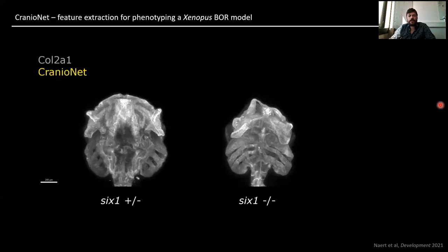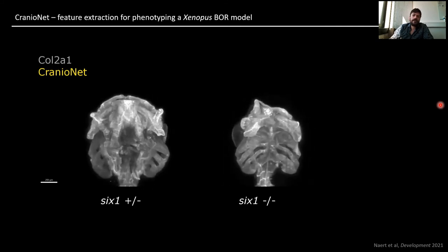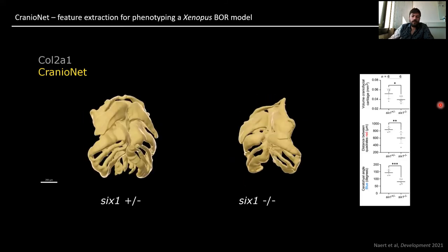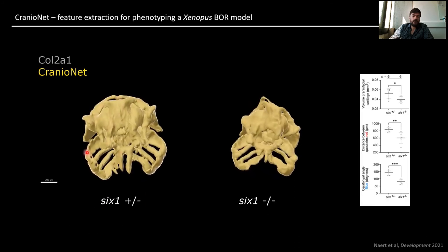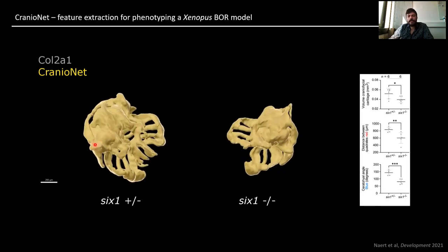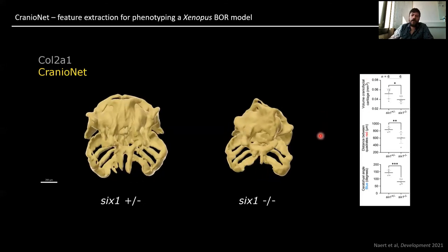With a little fine-tuning, we applied this craniofacial network to the BOR model tadpoles, where we could now three-dimensionally reconstruct the abnormalities seen in EYA1 homozygous knockouts compared to EYA1 heterozygotes with normal appearance. These segmentations allow feature extraction such as the volume of the craniofacial cartilage, the distance between the quadrates as a measure of width, and the ceratohyal angle as a measure of height.